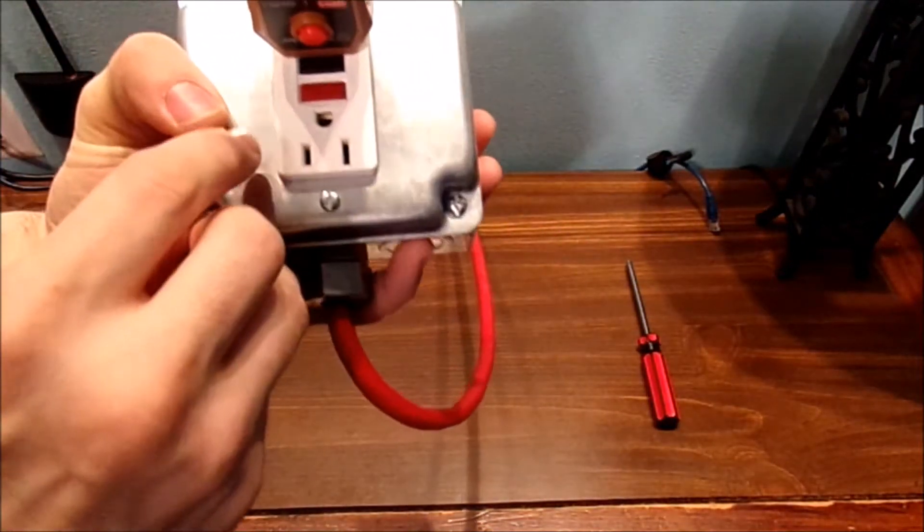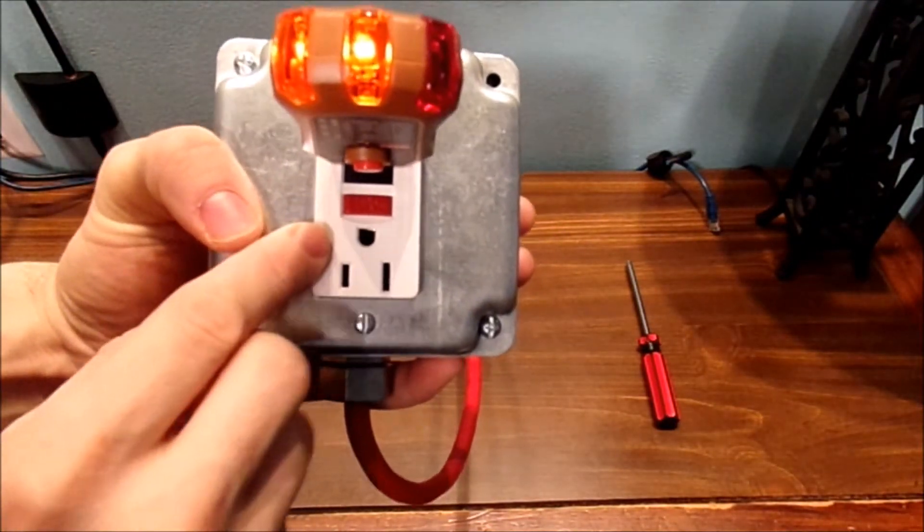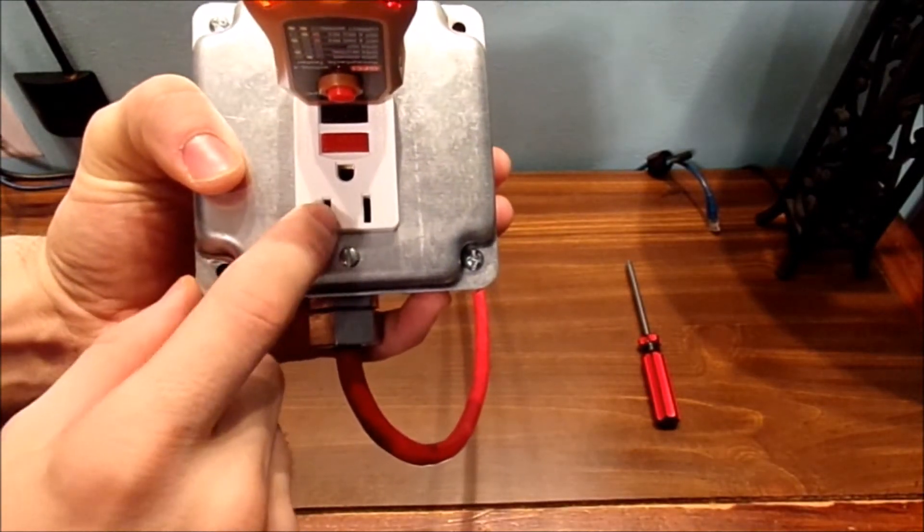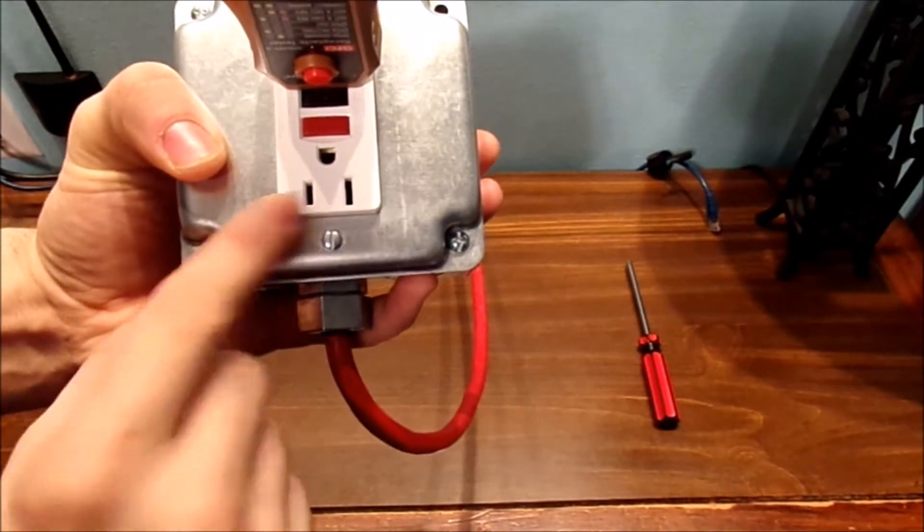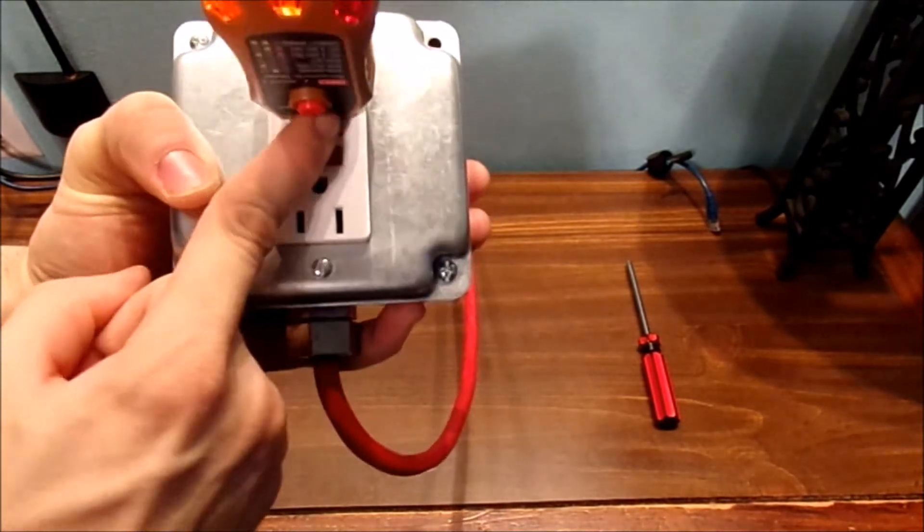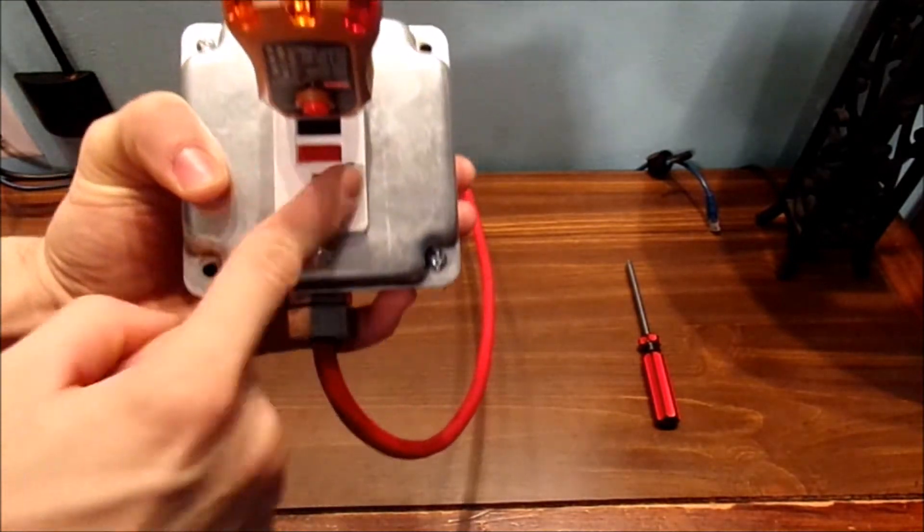But basically, on the unit here, you have your ground, your hot, and also your neutral. Your small one's basically your hot. Now, you're going to say, okay, so you trip this, does the power, is dead?